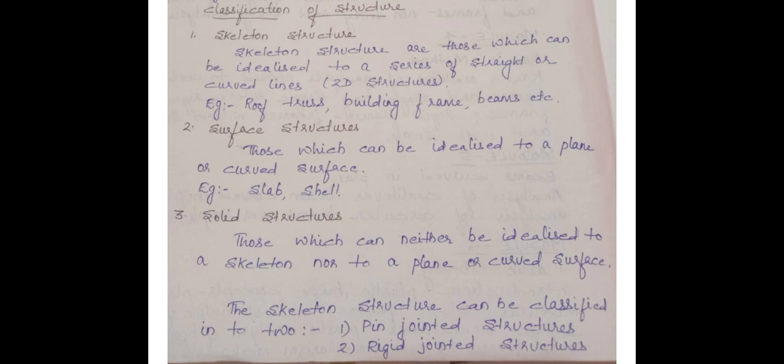Structure is classified into three types: Skeleton Structure, Surface Structure, and Solid Structures. Skeleton Structures are those which can be idealized to a series of straight or curved lines, i.e. 2D structures. Examples are Roof Truss, Building Frames, etc. Surface Structures are those which can be idealized to a plain or curved surface. Examples are Slab, Shell, etc.